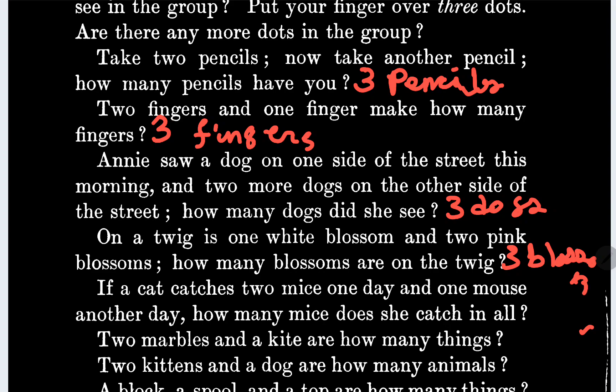If a cat catches two mice one day and one mouse another day, how many mice did she catch in all? She caught three mice.